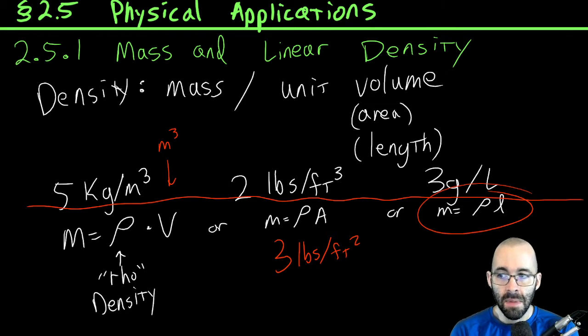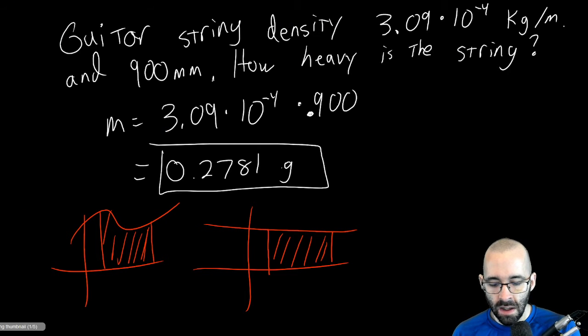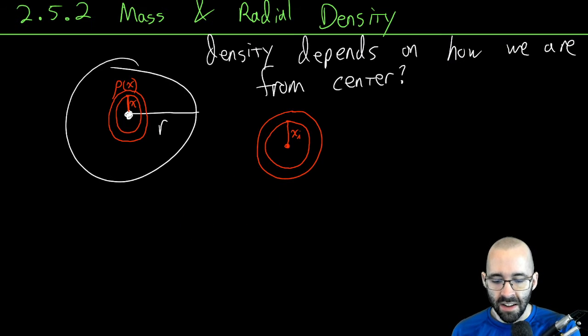We need the density. What's the relationship between density and mass? In the first one we said mass is density times length if it's one dimension. Now we're in two dimensions, it'll be density times area.